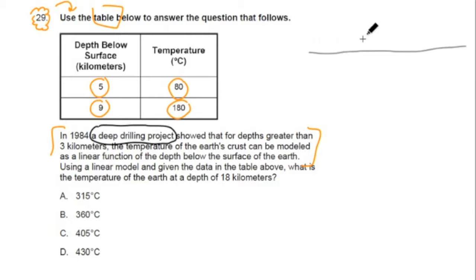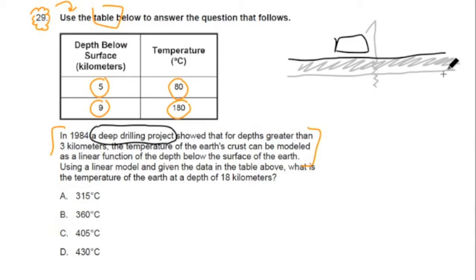Here's the surface of the Earth here. And there's this drilling project. They must have a big drill. They've got to have a big drill to drill down into the Earth. They're drilling down the Earth. And the first 3 kilometers, that has its own set of rules. But as it continues to drill down, it's drilling down into the Earth. They find a linear pattern.